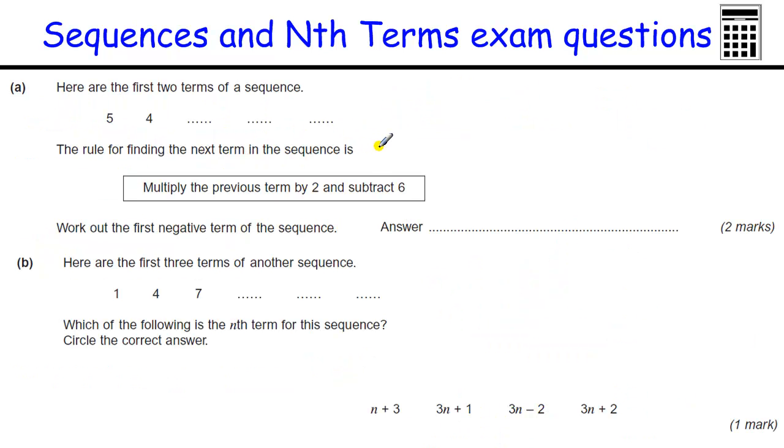Another sequence. First two terms are five and four. The rule is multiply the previous term by two and subtract six. So times five by two is ten, take away six is four. Four times two is eight, take away six would be two. Two times two is four, take away six is going to be minus two. Minus two times two is minus four, take away six is minus ten. What's the actual question? Work out the first negative term of the sequence. Well, the first negative term is minus two. For two marks.